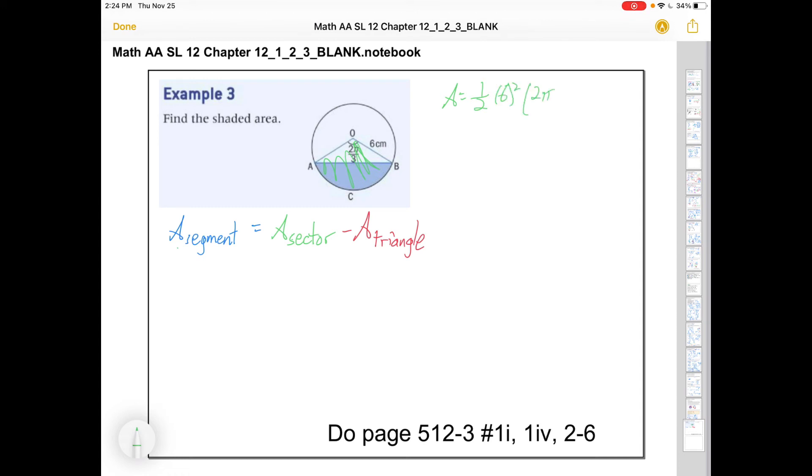Area of this whole sector is going to be one half r squared, so that's 6 squared times theta. The formula is one half r squared theta. That's one half times 36 times 2 pi over 3. That makes 18 here, that's divisible by 3 gives us 6, so area is going to be 12 pi centimeters squared.